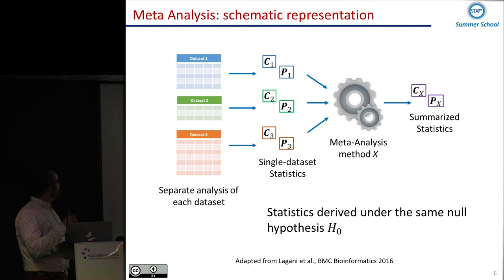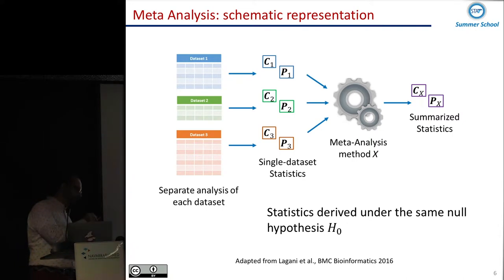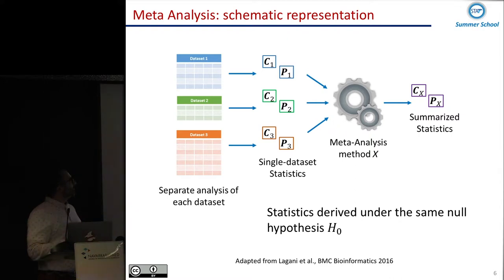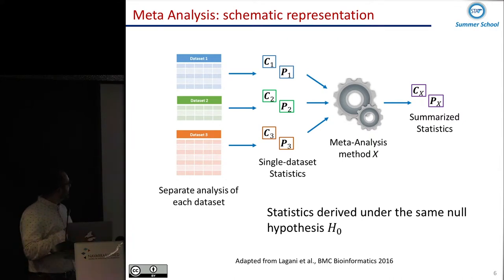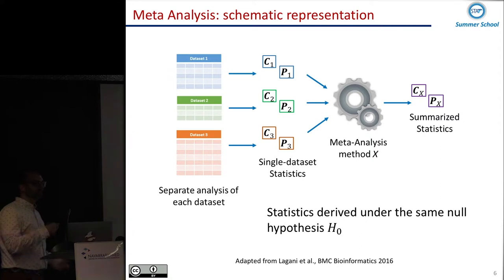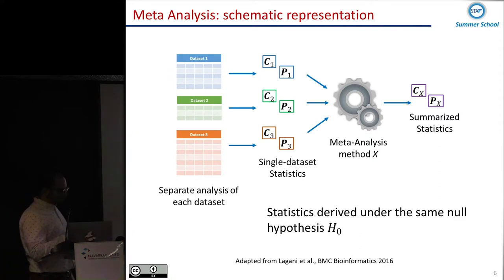What we have here is different datasets with different sample sizes. The datasets must be as homogeneous as possible, though they can still have some slightly different characteristics — for example, the type of protocol used may be slightly different. It is still okay if you record all of this. From each dataset you compute some type of statistics, then you merge the statistics with some method — this is what we are going to discuss now — and at the end you summarize them to answer your research question.